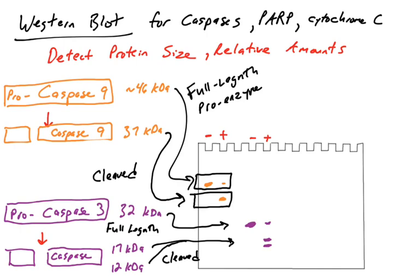You can detect this on a Western blot. When reading papers, scientists show you a region of the gel, so you might see both the full-length and cleaved version, or just one of them. What you're looking at is the cleavage of caspase 3. If caspase 3 is being cleaved, we know apoptosis is occurring — it could be occurring by either the intrinsic or extrinsic pathway, as both pathways result in the cleavage of caspase 3.